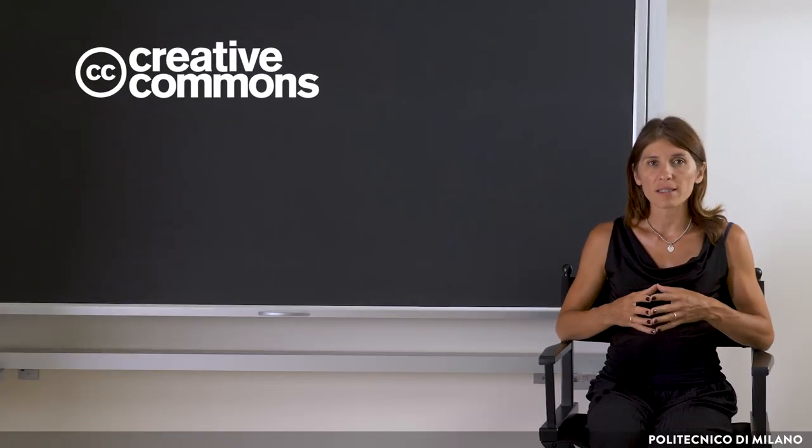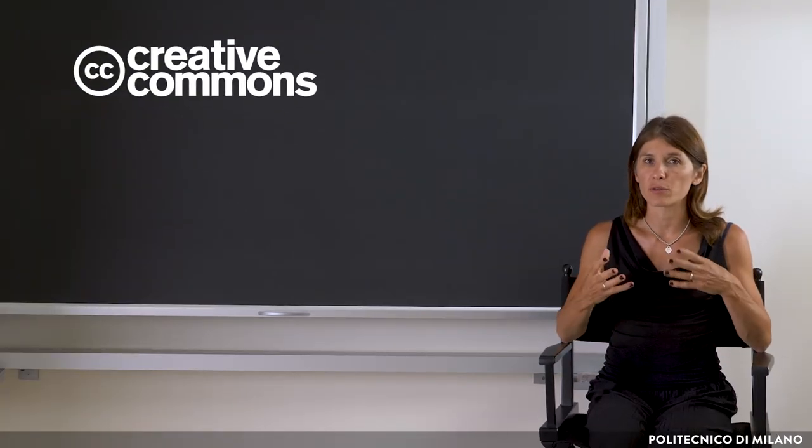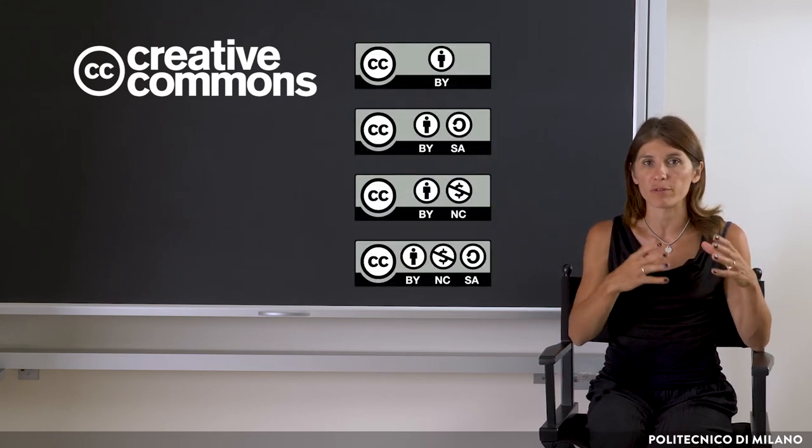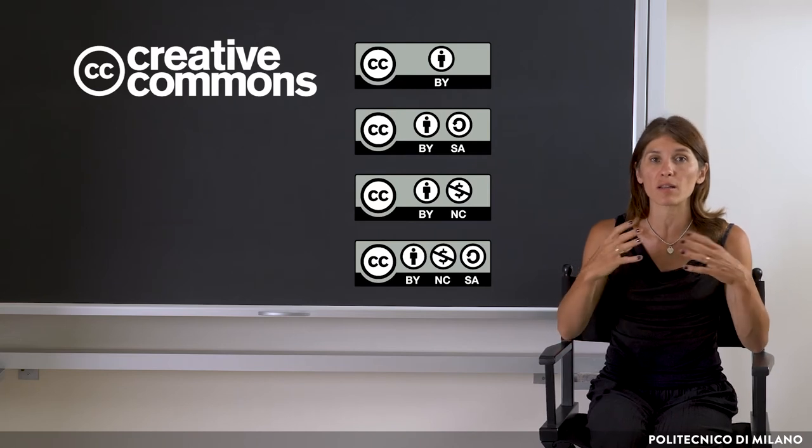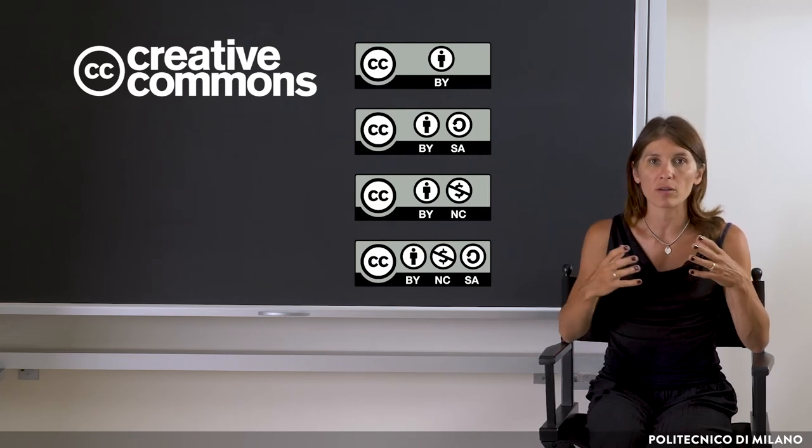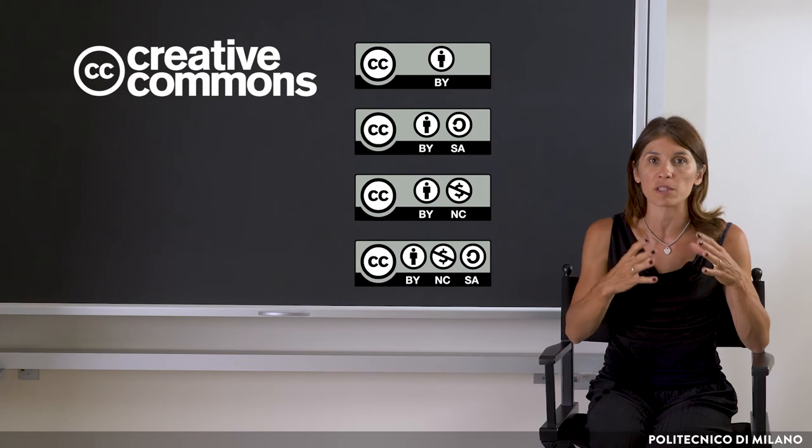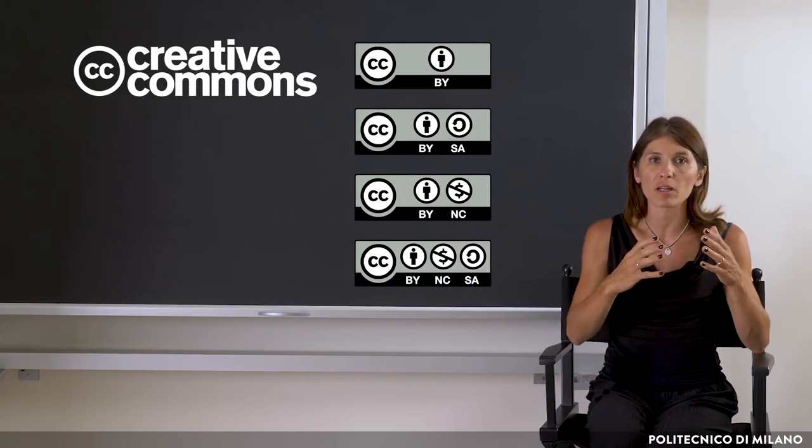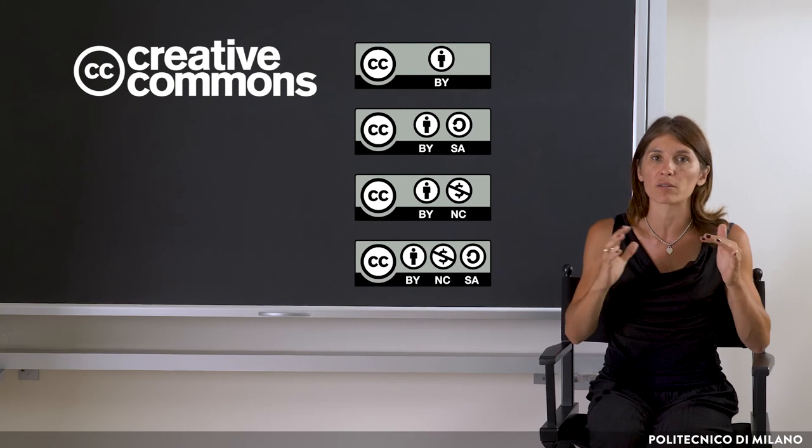Creative Commons licenses offer a variety of choices. The license that gives the most freedom allows the material to be modified and distributed even at a commercial level, after giving the author attribution in the manner specified by him. The most restrictive allows for the material to be shared only after attribution.